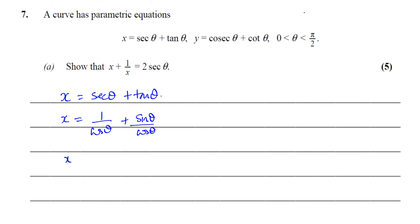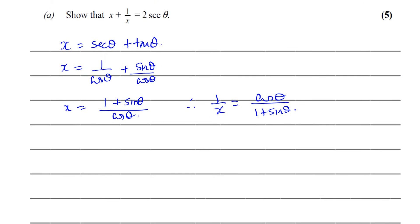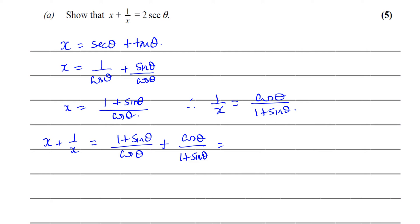This becomes x equals, with the same common denominator, one plus sin θ over cos θ. That means one over x is equal to the reciprocal of this, which is cos θ over one plus sin θ. So now we're saying: show that x plus one over x equals two sec θ. If I add these two expressions together, x plus one over x is going to be (one plus sin θ)/cos θ plus cos θ/(one plus sin θ).